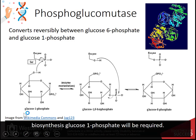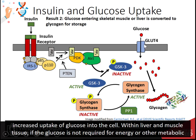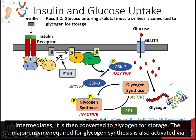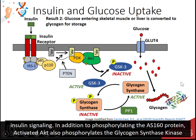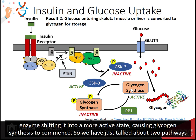For glycogen biosynthesis, glucose-1-phosphate will be the required form. Insulin signaling increases the number of GLUT4 transporters in the plasma membrane, causing an increased uptake of glucose into the cell. Within liver and muscle tissue, if the glucose is not required for energy or other metabolic intermediates, it is then converted to glycogen for storage. The major enzyme required for glycogen synthesis is also activated via the insulin signaling pathway. In addition to phosphorylating the AS160 protein, activated AKT also phosphorylates the glycogen synthase kinase enzyme, GSK3, which inactivates this protein. This causes protein phosphatase 1 to dephosphorylate the glycogen synthase enzyme, shifting it into a more active state, causing glycogen synthesis to commence.